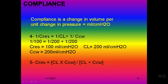Normally the total compliance formula is not simply lung plus chest wall compliance. It is: one over total compliance equals one over lung compliance plus one over chest wall compliance. For example, if lung compliance is 200 and chest wall compliance is 200, then 1/200 + 1/200 = 2/200 = 1/100, meaning the total compliance will be 100, not 400.